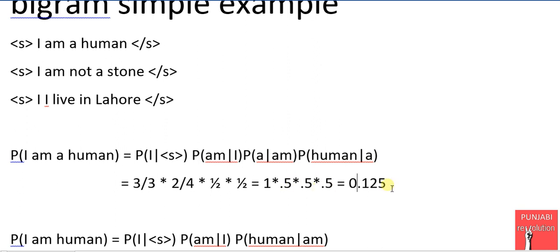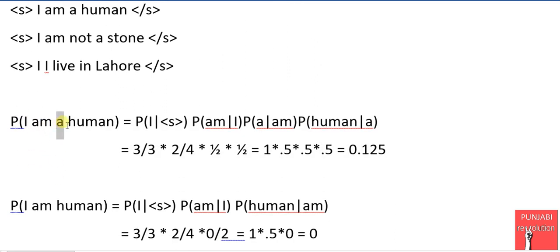This is the probability that has been computed using the simple bigram model. So let's change this sentence a little bit. We just remove this 'a' from this sentence and we want to compute the probability of 'I am human' rather than 'I am a human.'